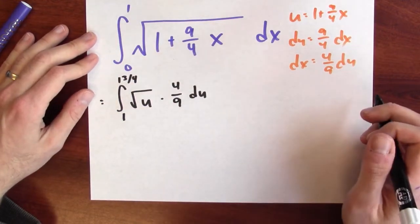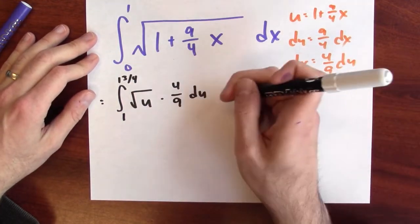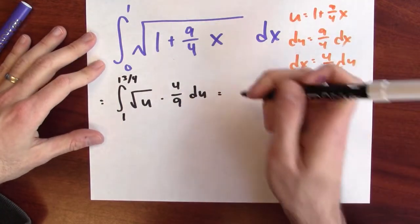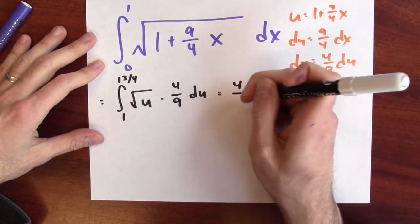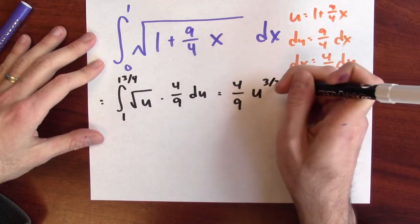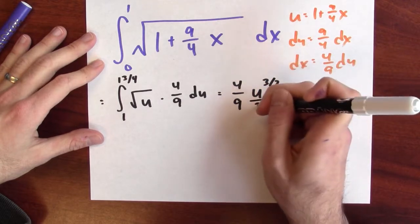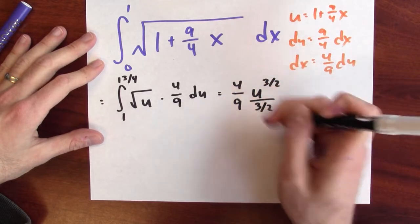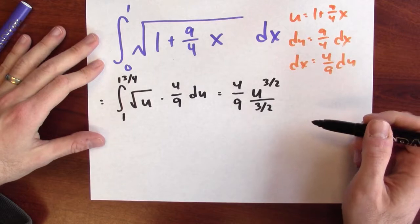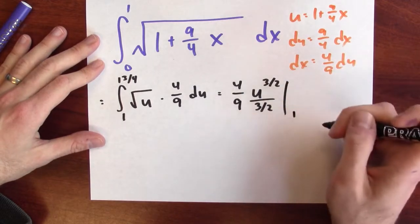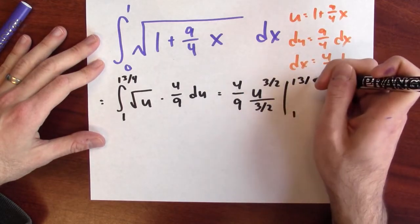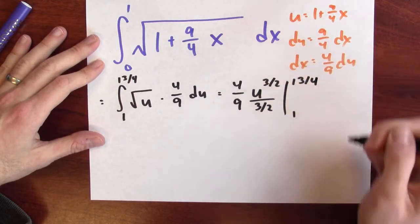Now I just have to write down an antiderivative. I can write this as 4 ninths times u to the 3 halves over 3 halves — that's an antiderivative for the square root of u — evaluated from 1 to 13 fourths.